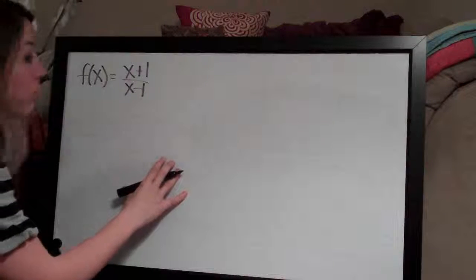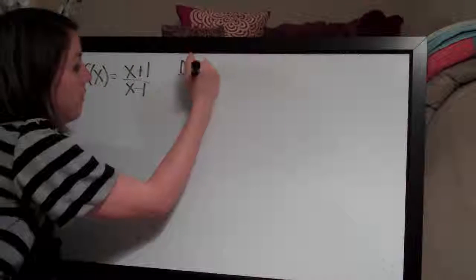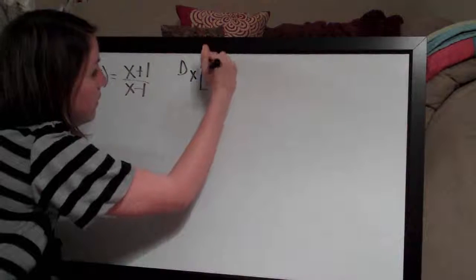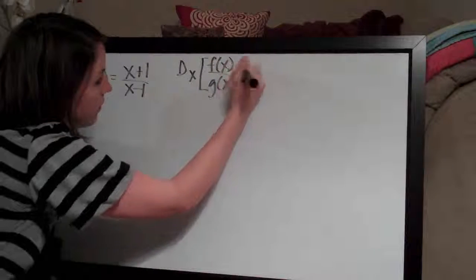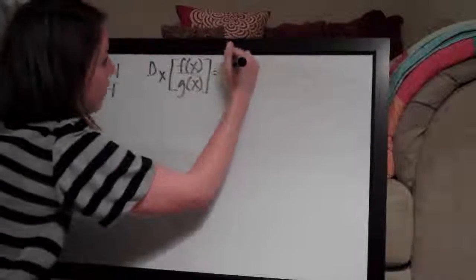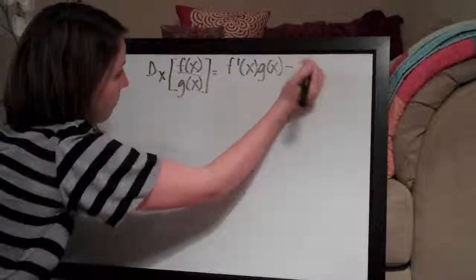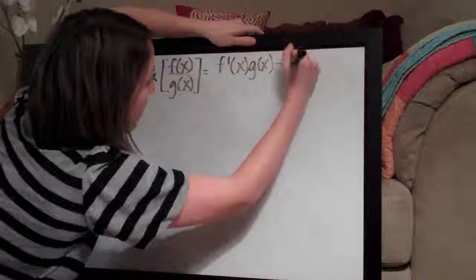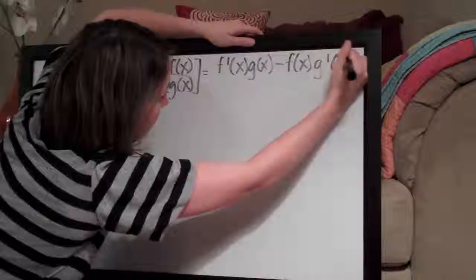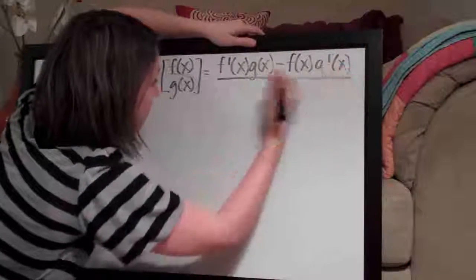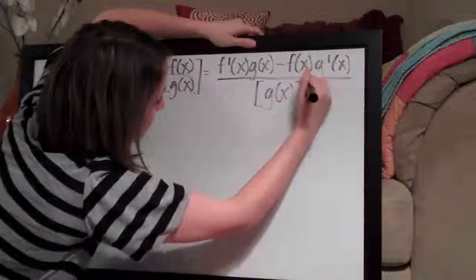Let's go ahead and write out the quotient rule so that we can see the formula we're looking at. It's d of x times f of x over g of x equals f prime of x g of x minus f of x g prime of x over g of x squared.